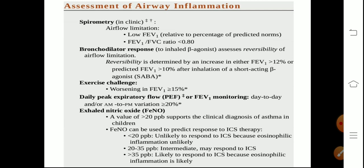We assess bronchodilator response to evaluate the reversibility of airflow limitation. You measure FEV1 before and after inhalation of a short-acting beta agonist; an increase in FEV1 of more than 12% gives a positive test. An exercise challenge showing worsening of FEV1 more than 15% is also positive. Diurnal variation of FEV1 of more than 20% is a positive test. Exhaled nitric oxide tells you about eosinophilic inflammation; a value of more than 20 parts per billion supports the clinical diagnosis of asthma in children.